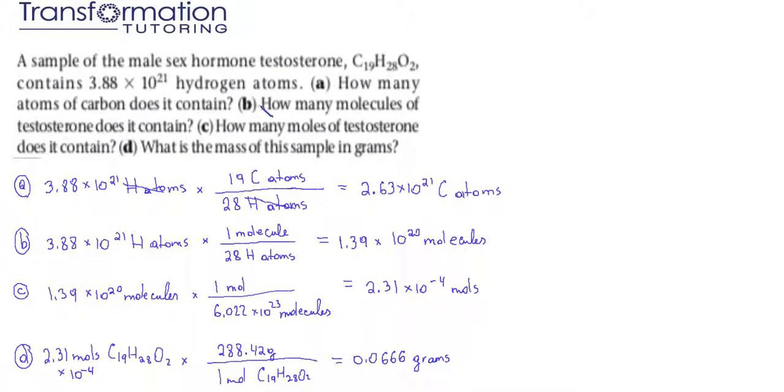Part B: How many molecules of testosterone does it contain? We start with what we are given: 3.88 times 10 to the 21st hydrogen atoms. We need the ratio between hydrogen atoms and molecules. In our formula, there are 28 hydrogen atoms for one testosterone molecule. We put hydrogen atoms at the bottom to cancel them, and molecules on top, with a ratio of 28 hydrogen atoms for one molecule. When we plug it into our calculator, we get 1.39 times 10 to the 20 molecules of testosterone.